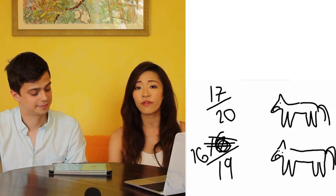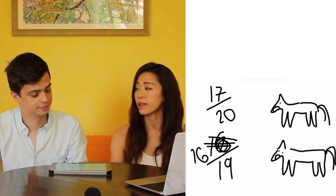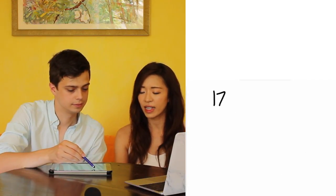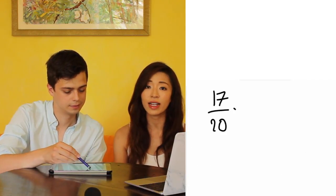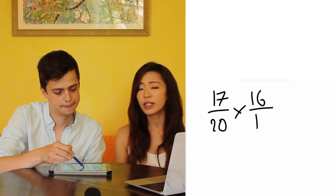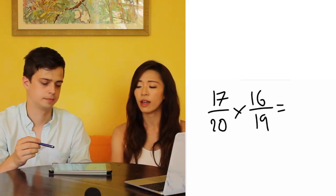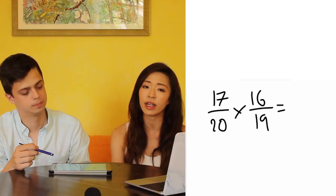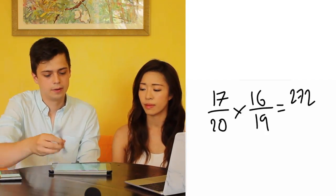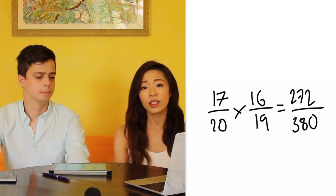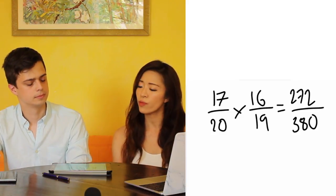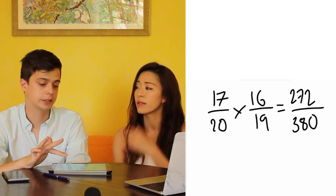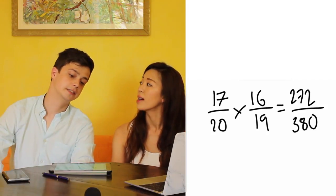So what do we do with these two fractions if we want both cases to happen? Times one by the other! Exactly — so multiplying 17 over 20 by 16 over 19. This means both horses won't be in the top three. But the question is asking for the chance of having at least one horse in the top three. 17 times 16 is 272, and 20 times 19 is 380. But this is not the actual probability we're looking for, so we take 1 minus this — subtracting 272 from 380 and putting that on top.